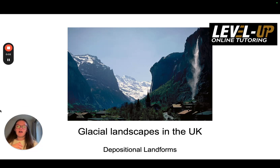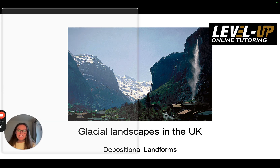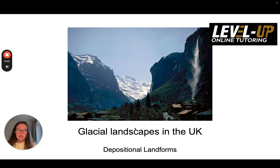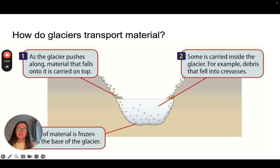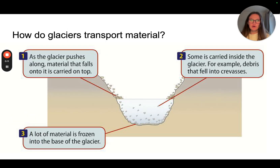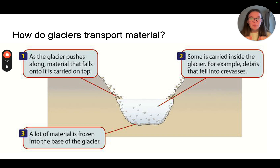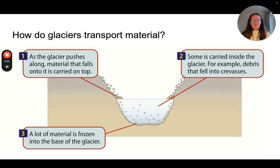Hello and welcome back. Today we are thinking about depositional landforms in the UK. So how do glaciers transport material? There are three different ways. As the glacier pushes along, there is material that falls upon the top of it, just like there would be in a river — things fall into the river.